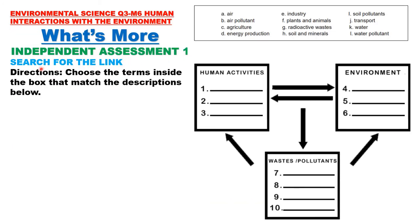Independent Assessment 1: Search for the Link. Choose the terms inside the box that match the descriptions below. The categories are: human activities, environment, waste, and pollutants. The choices include: air, air pollutant, agriculture, energy production, industry, plants and animals, radioactive waste, soil and minerals, soil pollutants, transport, water, and water pollutant. Place these words or phrases in their appropriate boxes.